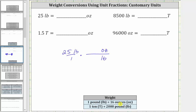Since one pound equals 16 ounces, the unit fraction is 16 ounces over one pound. Because we have pounds divided by pounds, the units of pounds simplify out, leaving us with ounces. Now we multiply — notice the denominator is just one, and therefore the product is 25 times 16, which is 400. So 25 pounds equals 400 ounces.